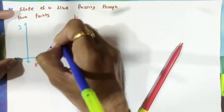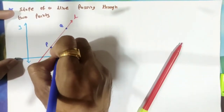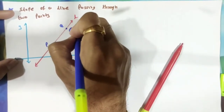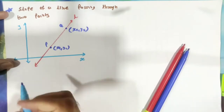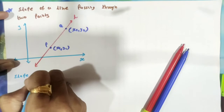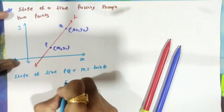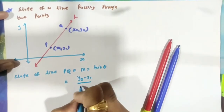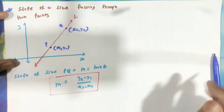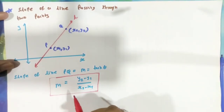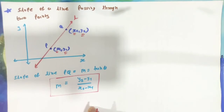Coordinates of point P are (x1, y1) and coordinates of point Q are (x2, y2). We have to find the slope of this line. The formula for the slope of line PQ: slope M = tan(theta) = (y2 − y1) / (x2 − x1). This is the slope of the line — the ratio of the difference of corresponding y-coordinates to x-coordinates.